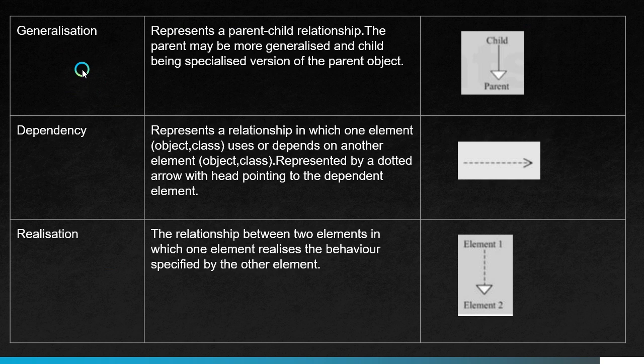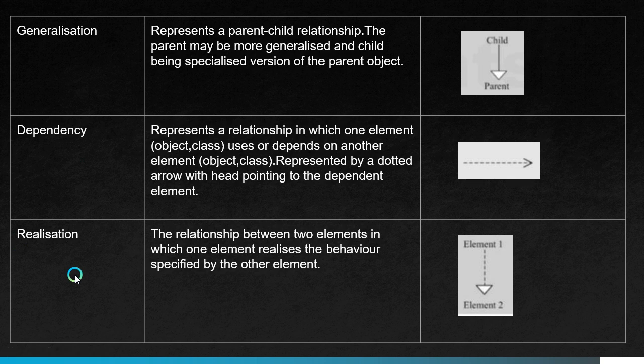Generalization represents a parent-child relationship. The parent is the more generalized one and the child is a specialized version of the parent object. Dependency represents a relationship in which one element uses or depends on another element, represented by a dotted arrow with the head pointing to the dependent element. Realization is a relationship between two elements in which one element realizes the behavior specified by the other.